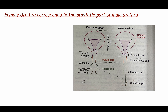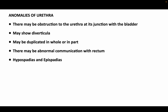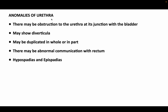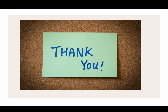Comparing the two diagrams, the female urethra corresponds to the prostatic part of the male urethra; the rest in the female is the vestibule contributed by the phallic portion. Anomalies of the urethra include obstruction at the junction with the bladder, diverticula, duplication, and abnormal communication with the rectum. Hypospadias and epispadias will be discussed in the next lecture. If you have any doubts, please write in the comment box, and kindly like, share, and subscribe.